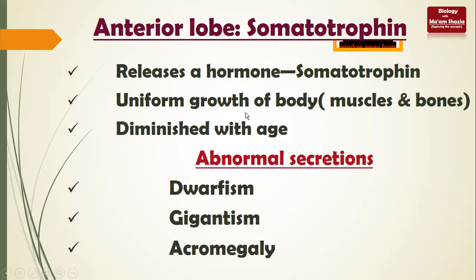Somatotrophin is a very important hormone in our body. The anterior lobe releases somatotrophin, which helps us in the growth and uniform growth of the body - muscles and bones grow proportionately. It is not like hands grow big while muscles stay small. It helps in uniform growth depending on the genetics of our cells and DNA. You can see this from class 2 to class 4 to class 6 and now class 10 - growth is a continuous process.